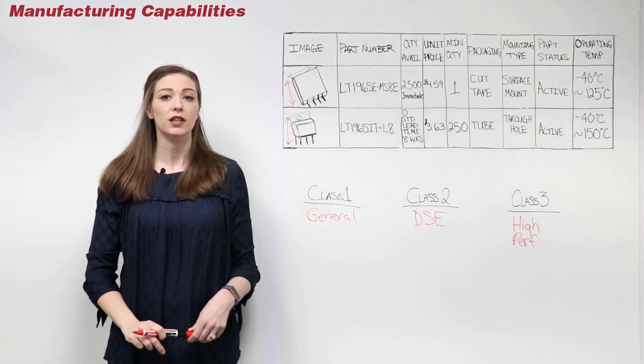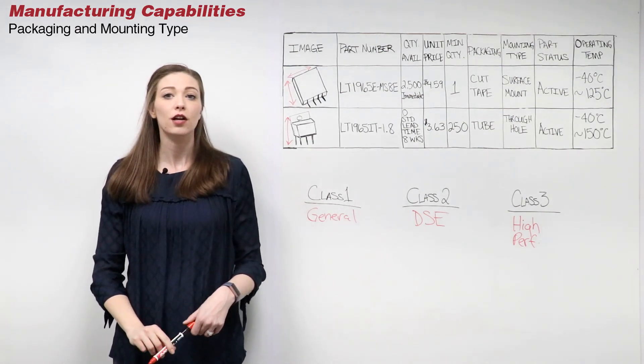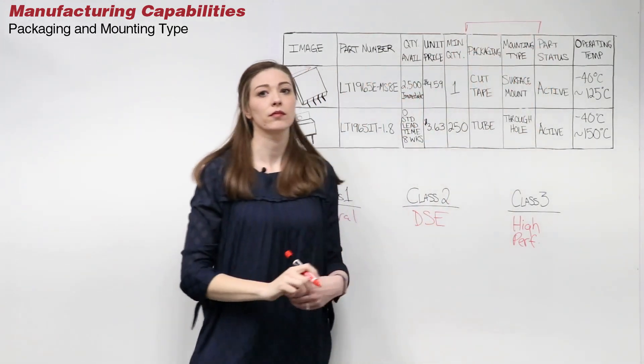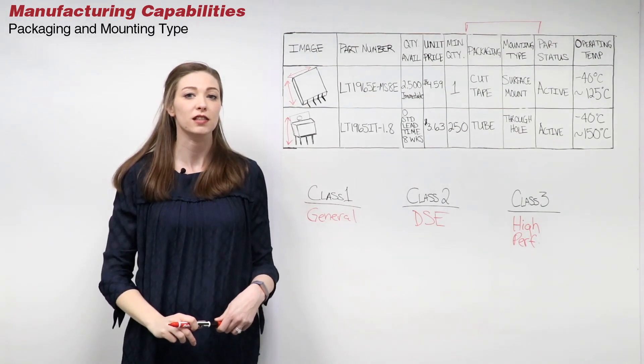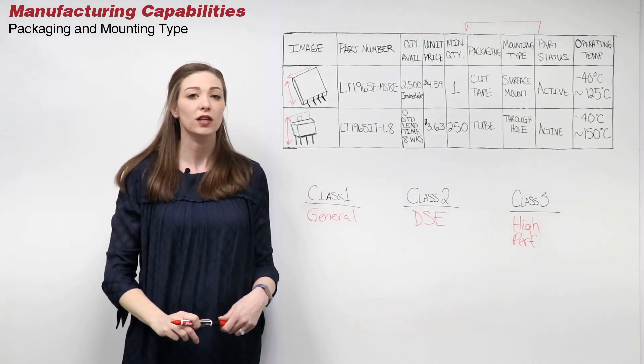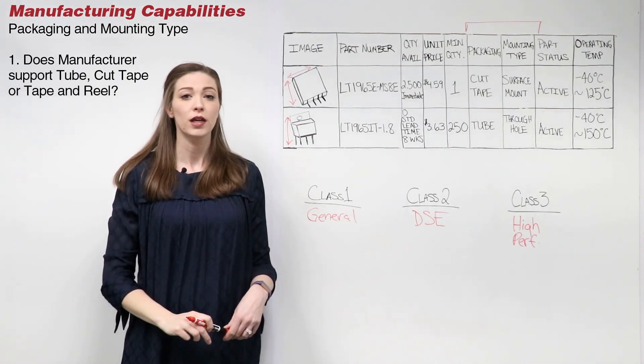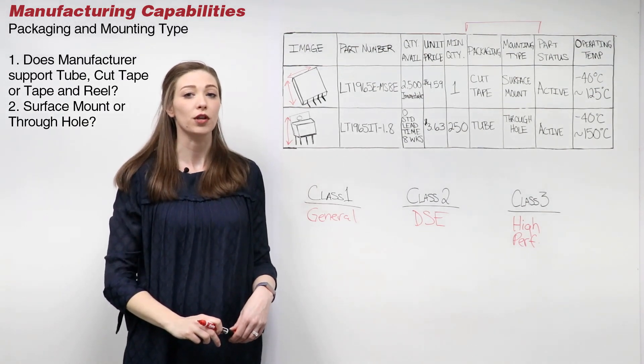Manufacturing capabilities also play a part in your component selection. Take a look at the packaging and mounting type to ensure they are compatible with your manufacturer's process. Some questions you might want to ask yourself are: Does your manufacturer support tube, cut tape, or tape and reel? Do you need surface mount or through-hole components?